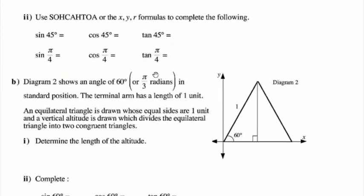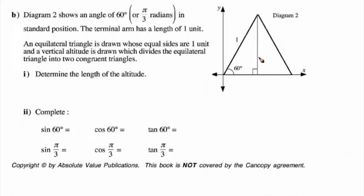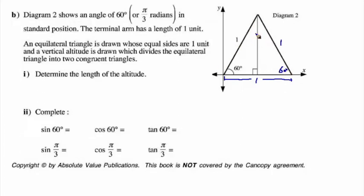Taking a look at this next diagram, we have an equilateral triangle where each side is equal to 1. We want to know what the height of this altitude is — we'll call it h. Since it's an equilateral triangle with congruent halves, the base is split in half, so this length from here to here is 1 half. We can use the Pythagorean theorem on this half right triangle.